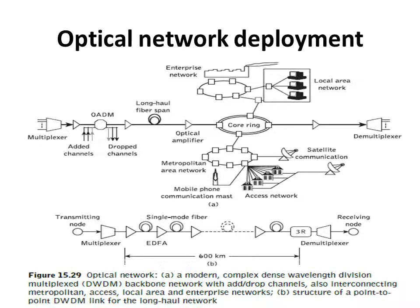Figure A represents how the dense WDM with the coring feeds all other networks. The main WDM is the backbone network, where coring represents the backbone, which is used to connect the metropolitan area network. In the metropolitan area network, mobile phone communication, access networks, satellite communication can be connected, and enterprise networks and local area networks can be connected to each other. It also contains long haul fiber spans allowing optical amplifiers. Everything is included in a single optical network — that is how complex it is.